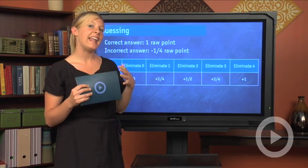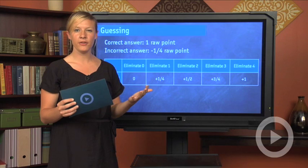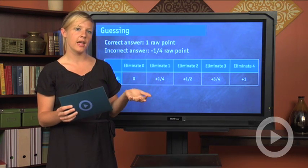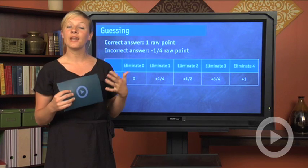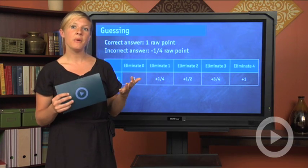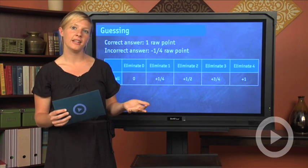If you're not able to eliminate any of the answer choices, say, for example, that you look at the question and you can't eliminate any of the five, what's going to happen is that you're going to guess. And when you guess, you have a 20% chance of getting that answer correctly.